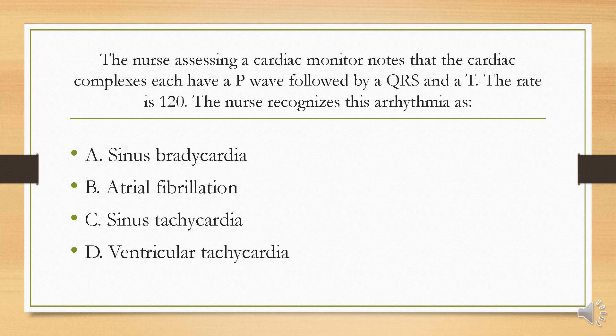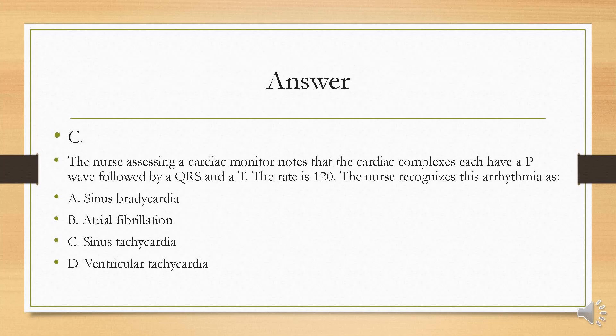The nurse assessing a cardiac monitor notes that the cardiac complexes each have a P wave followed by a QRS and a T, and the rate is 120. The nurse recognizes this arrhythmia as: A, sinus bradycardia; B, atrial fibrillation; C, sinus tachycardia; or D, ventricular tachycardia? Your answer is C. Sinus tachycardia has a P wave followed by a QRS and a T. Any rhythm with a P wave indicates electrical conduction started in the SA node — thus the first part of the interpretation is sinus. All components are present and in order, but the rate is over 100 beats per minute, making this sinus tachycardia.